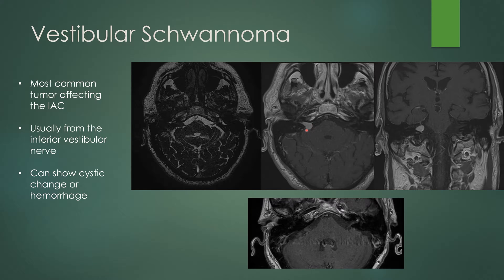The vestibular schwannoma usually has an ice cream cone shape. There is widening of the porus acusticus, which is the opening of the internal auditory canal. Enhancement can extend to any point within the IAC, can fill the canal, and can extend into the cerebellar-pontine angle — even causing compression of the cerebellum or middle cerebellar peduncle depending on size. This one involves the cerebellar-pontine angle without mass effect on adjacent structures but involves a significant intracanalicular portion.